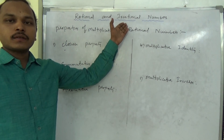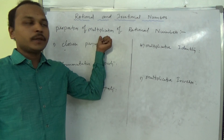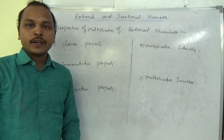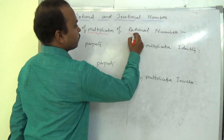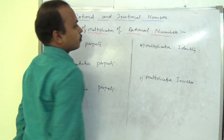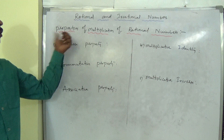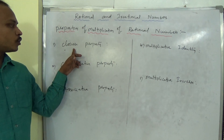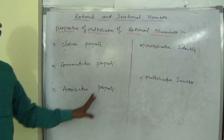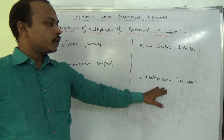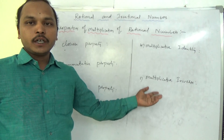Rational and Irrational Numbers. In this chapter, we will see properties of multiplication of a rational number. We have a total of five properties: closure property, commutative property, associative property, multiplicative identity, and multiplicative inverse — that is, existence of identity and existence of inverse.